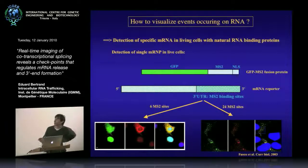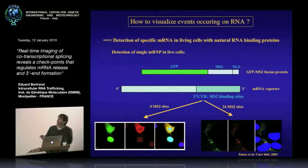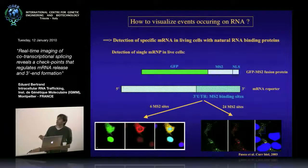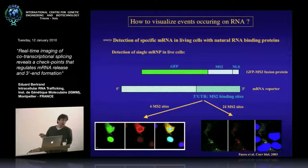First I want to remind you of the method we use to visualize RNA in live cells. It's a two-component system: on one side you have a GFP molecule fused to the coat protein of bacteriophage MS2, and then we have a reporter gene. In the 3-prime UTR of this reporter gene, we insert binding sites for the MS2 protein. When we co-express the two in cells, the GFP-MS2 binds to the RNA and we can see it in live cells.